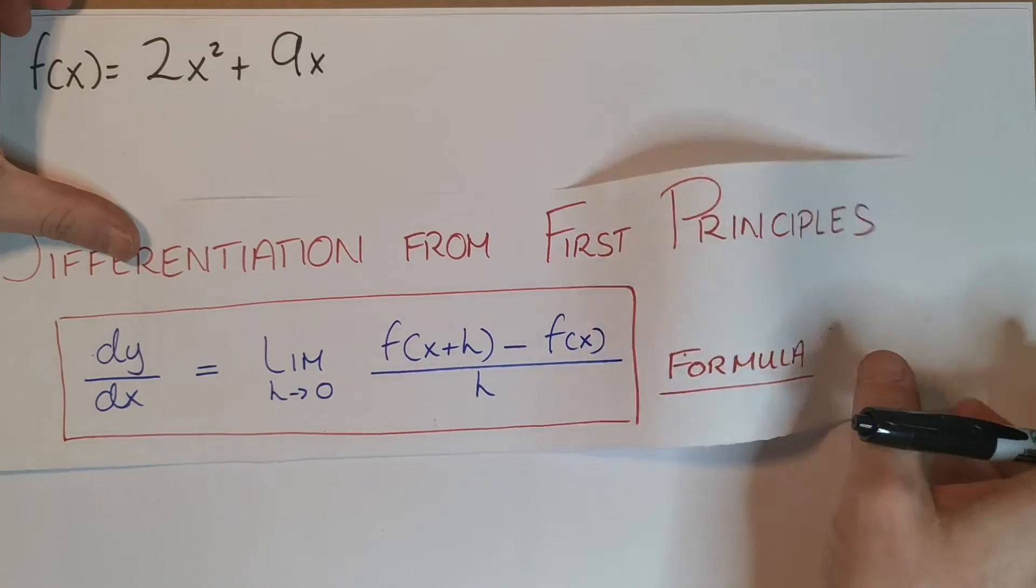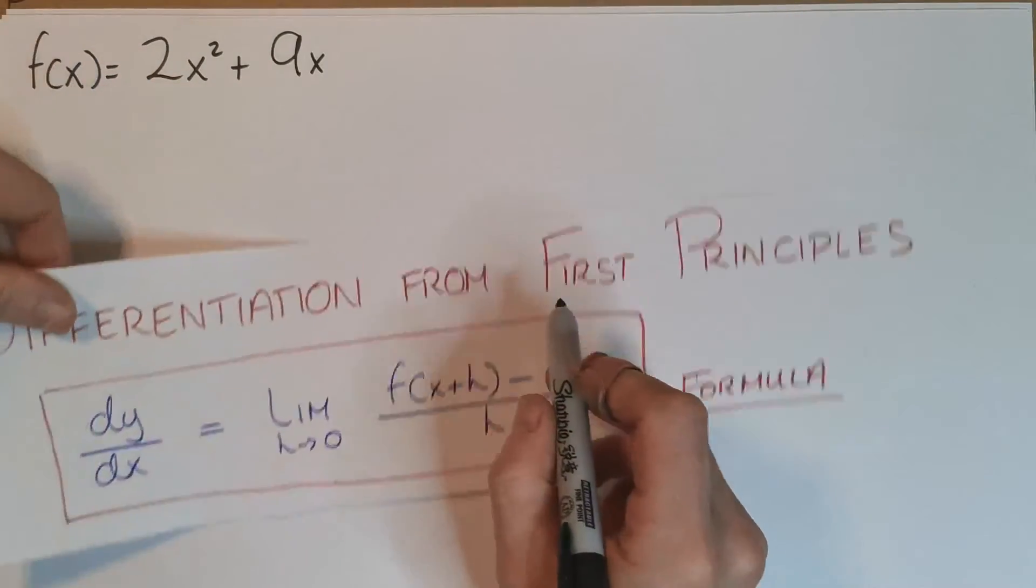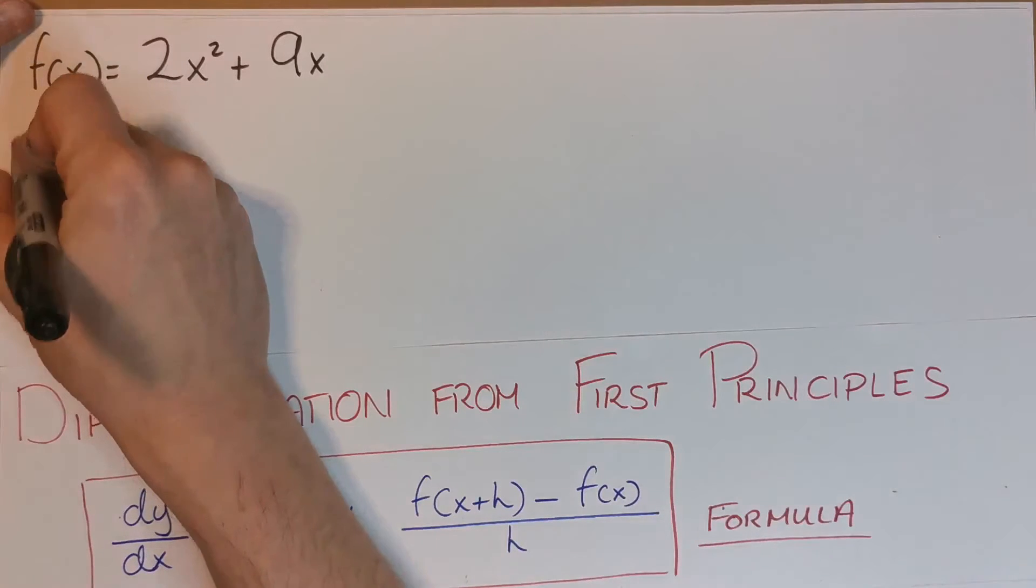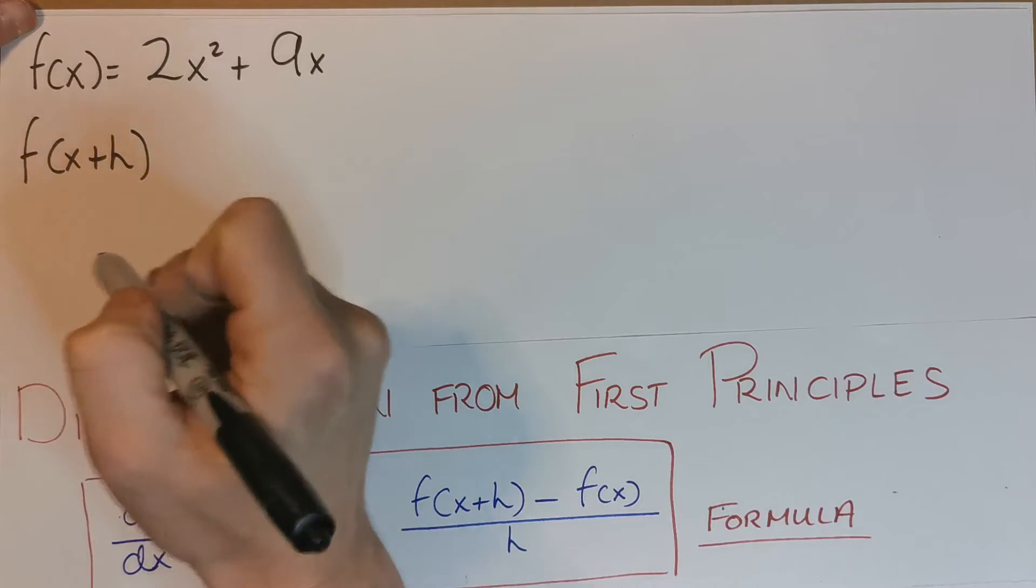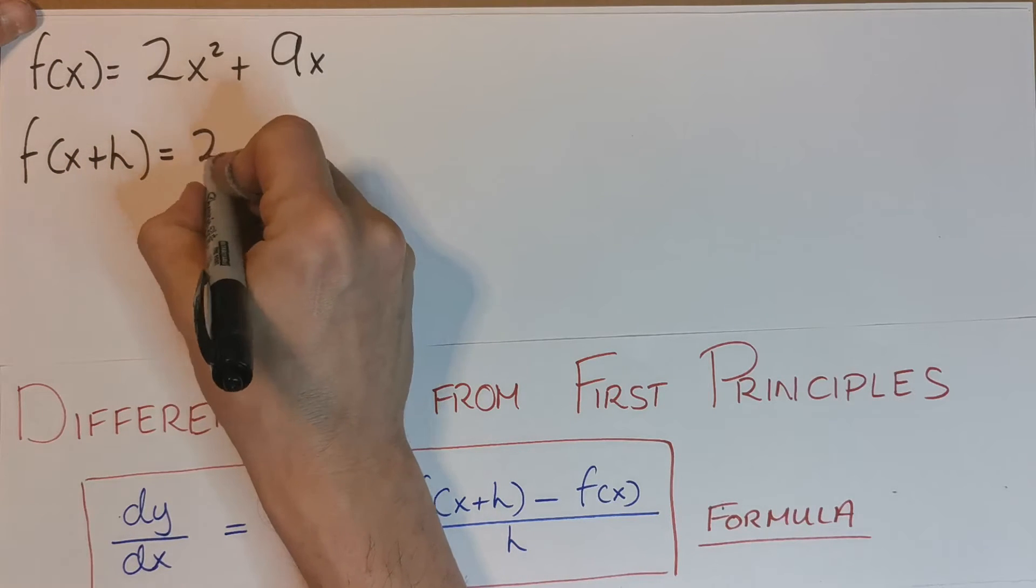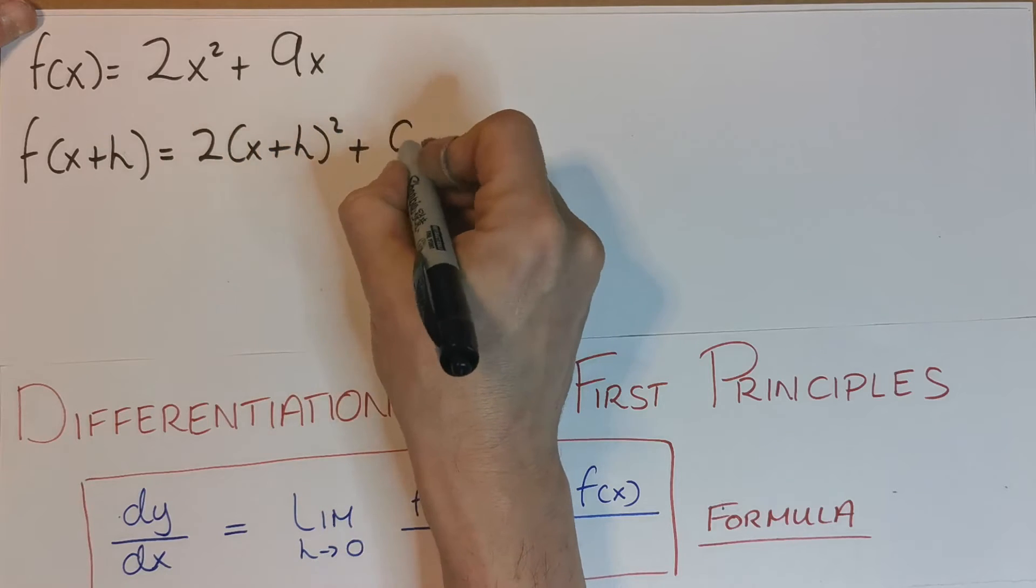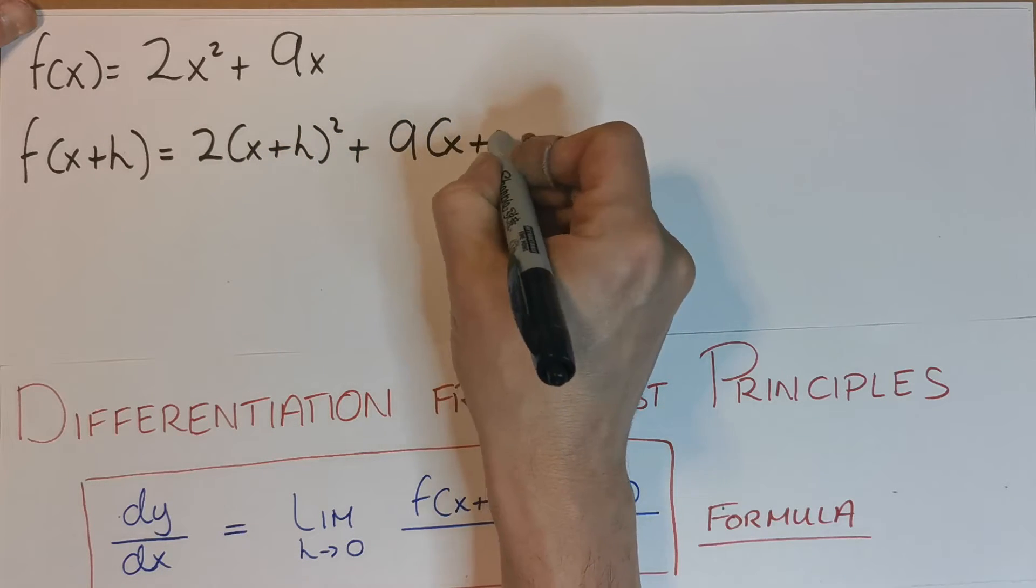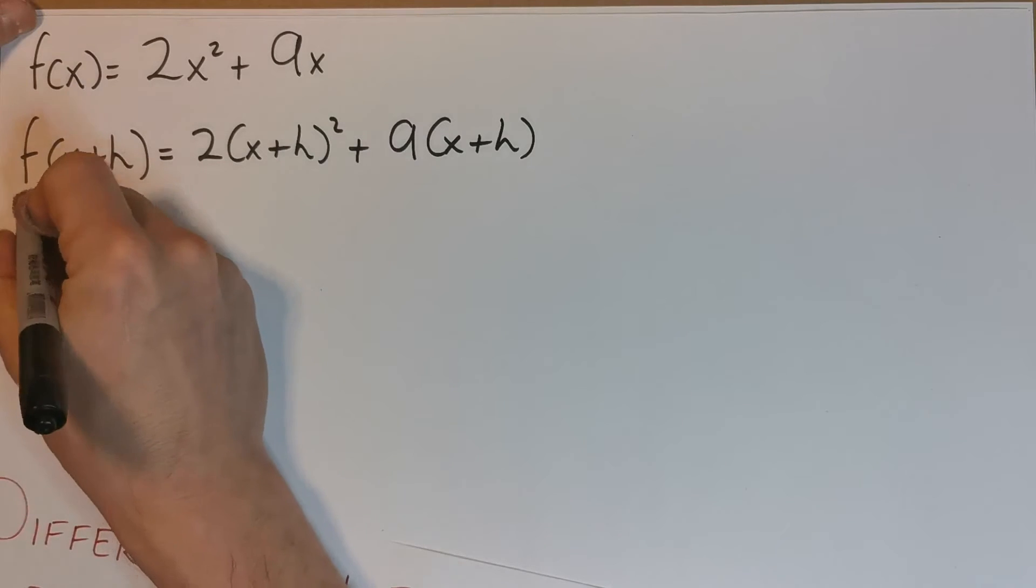Let's actually get f(x+h). So this is going to be replacing everywhere that there is an x with x+h. So it's going to be 2(x+h)² + 9(x+h). Okay, so let's actually expand this out. So 2 times (x+h)² is 2 times (x² + 2xh + h²) plus 9x plus 9h.